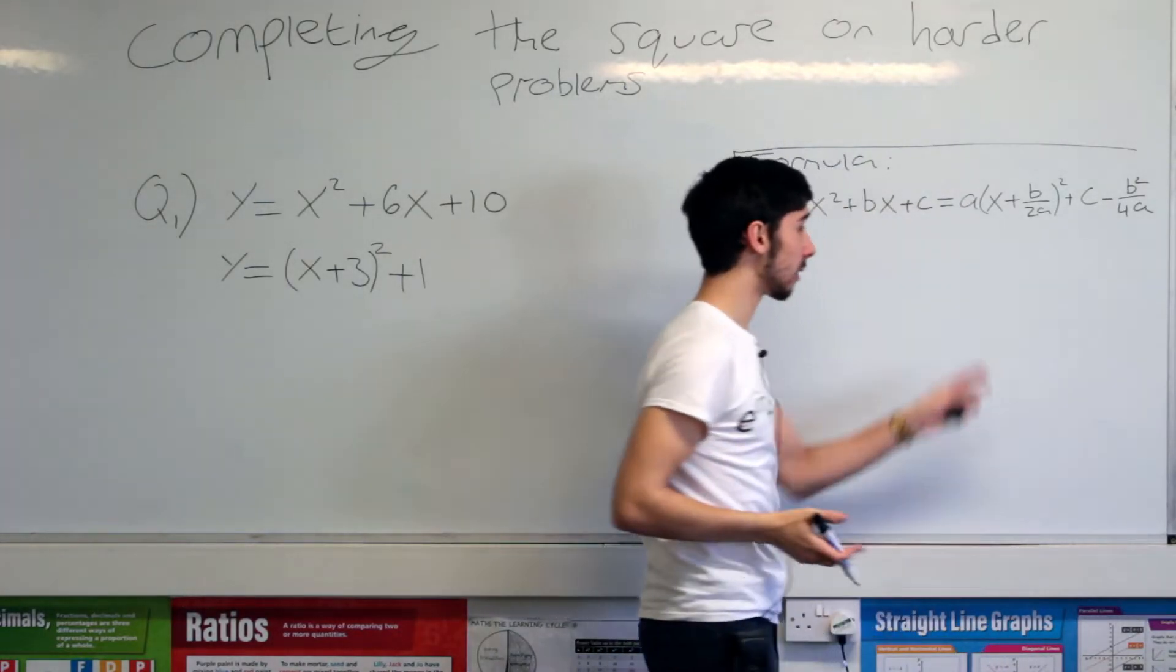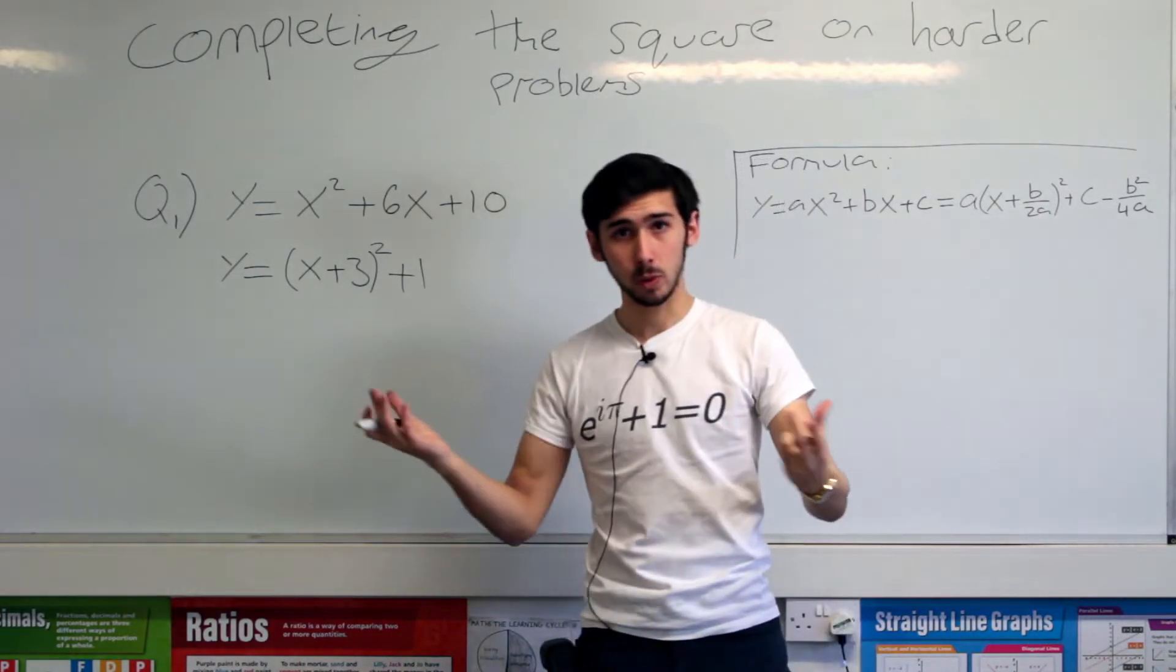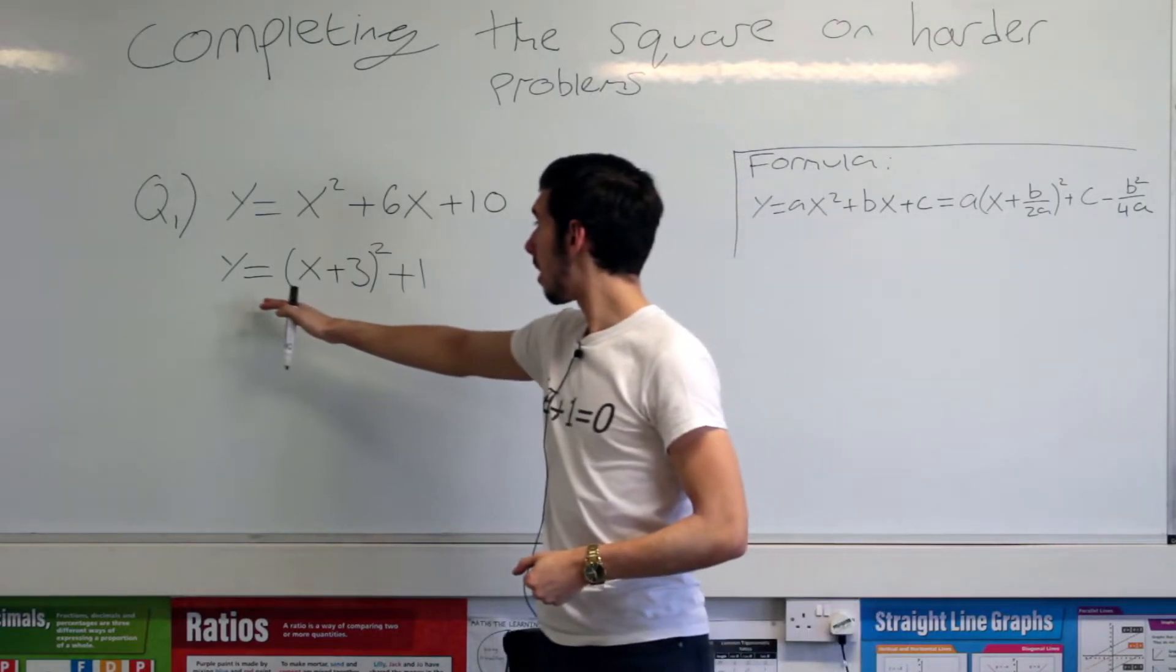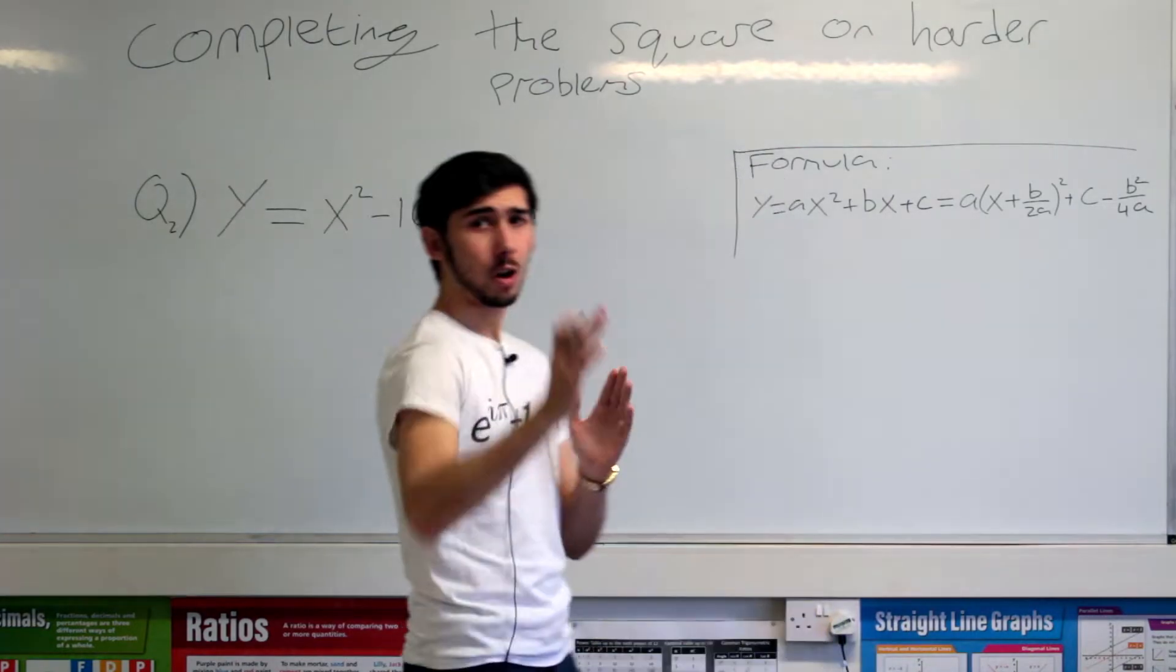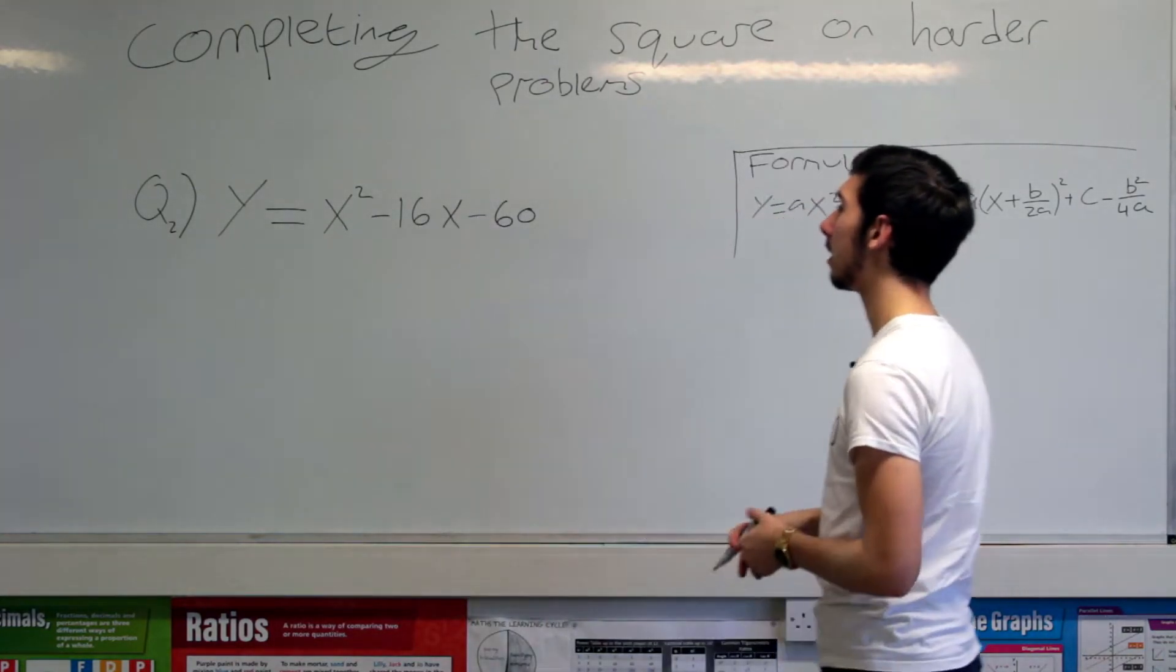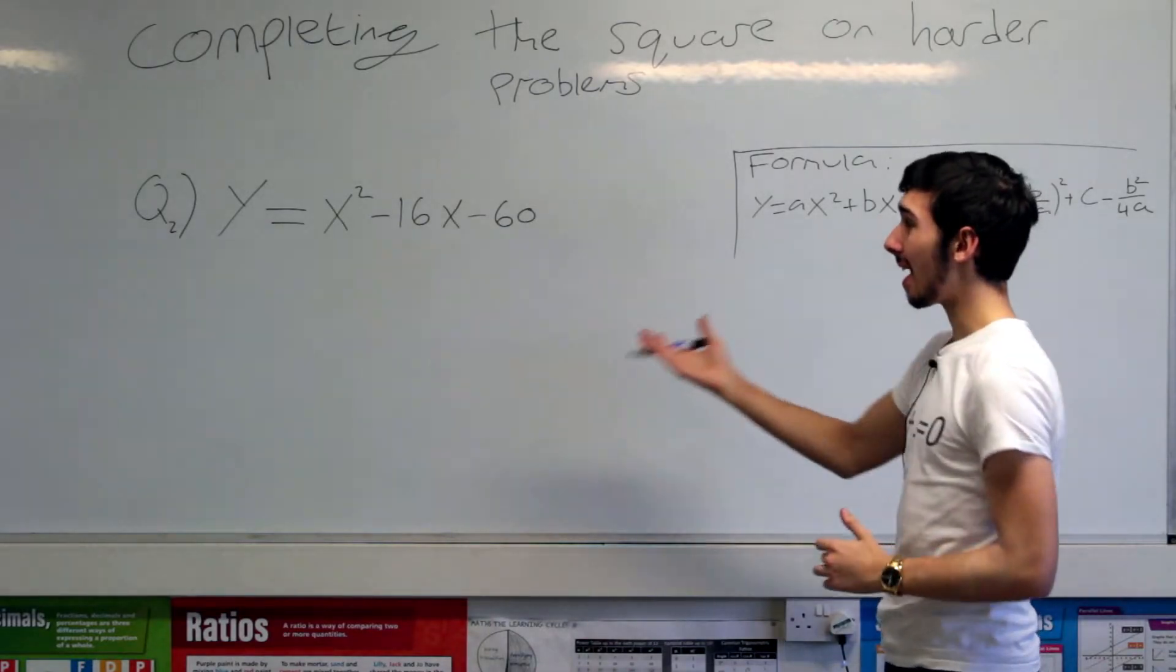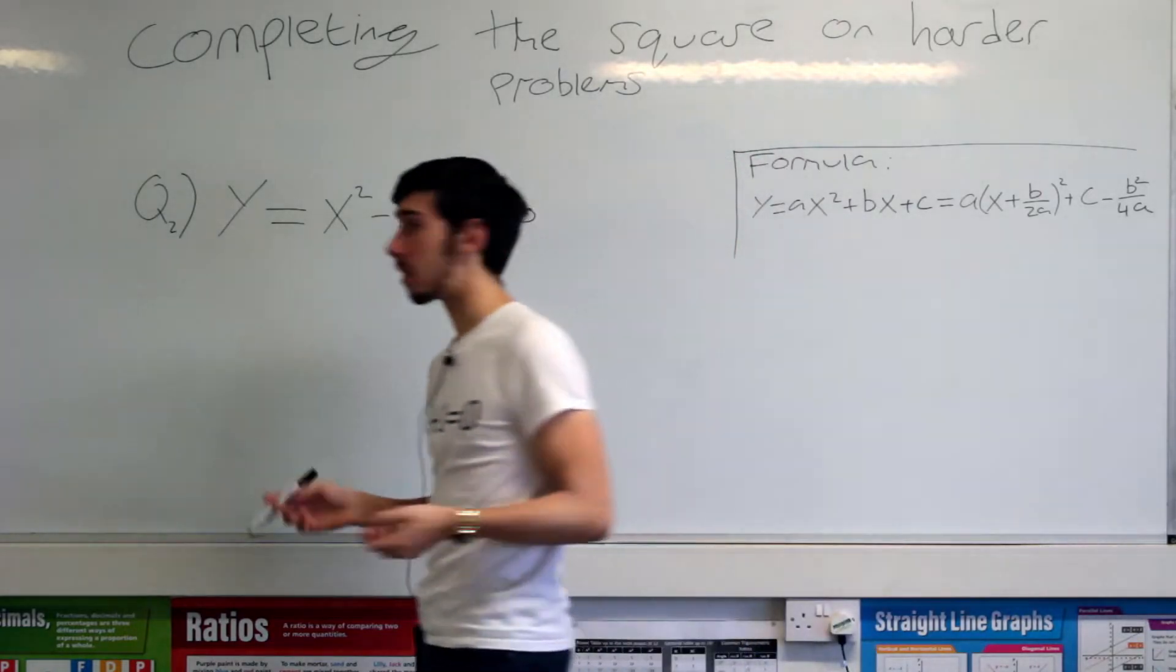Again, we can, if we want to, plug our numbers into the formula and we will get the same result. So this is our answer. Let's try another question out. Okay guys, we've got another example here. We're taking a look at y equals x squared minus 16x minus 60, and we're going to be completing the square on it.